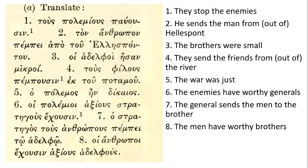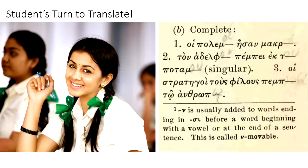Finally, the eighth sentence: 'oi anthropoi echousin axious adelfous' — 'the men have worthy brothers.' You recognize those 'oi' and '-us' endings as both plural, but one nominative and the other accusative. Now it's the student's turn to translate. I want you to write these out on a piece of paper, fill in the endings, and we'll meet back in the next video to cover the third lesson on the present indicative and infinitive active of omega verbs. Thank you so much for watching — I look forward to more videos.